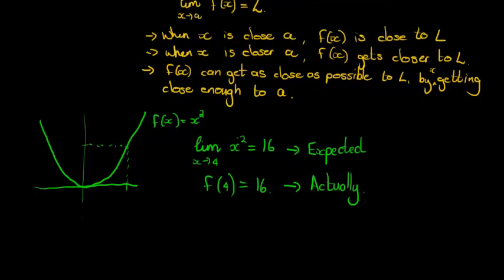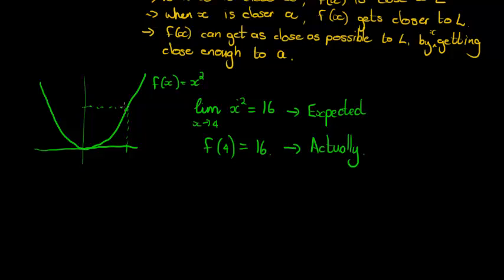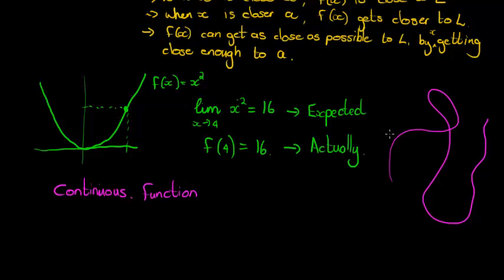Now, this gives us as mathematicians the means to define a continuous function. A continuous function, loosely defined, is a function I can draw without lifting my hands. If I can draw this thing without lifting my hand, it's continuous.